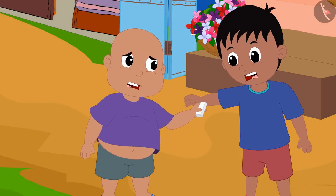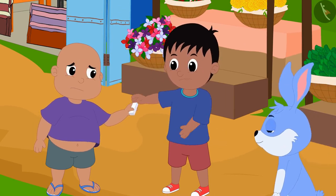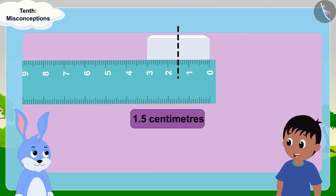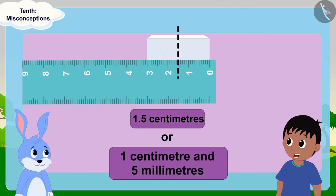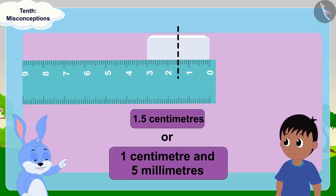Both Raju and Babloo started quarrelling. Just then Bunny was passing by. 'Bunny, can you tell us whether half of this eraser is 1.5 centimeters long or one centimeter and five millimeters long?' Raju asked Bunny. Bunny burst out laughing.